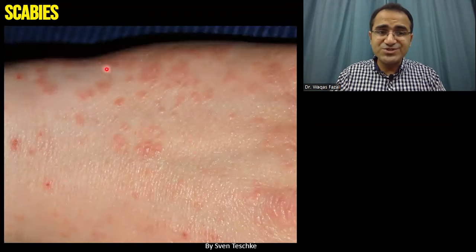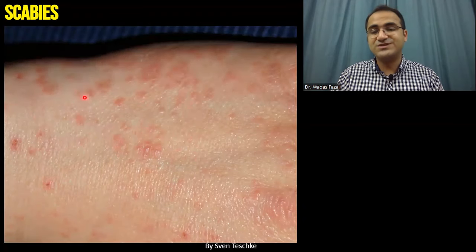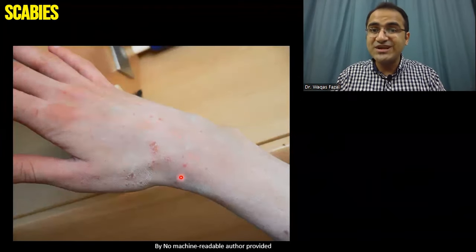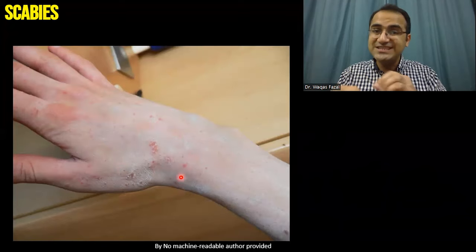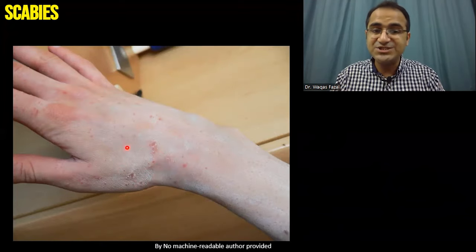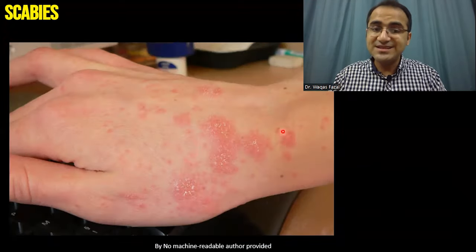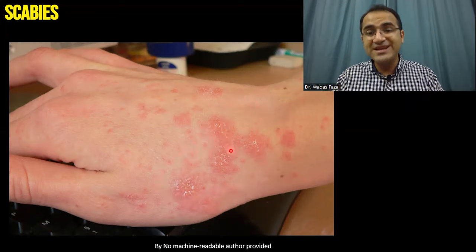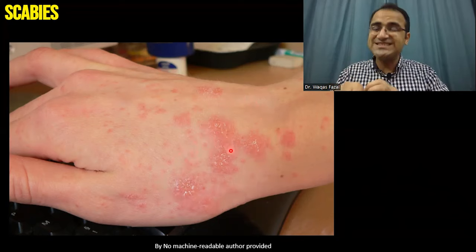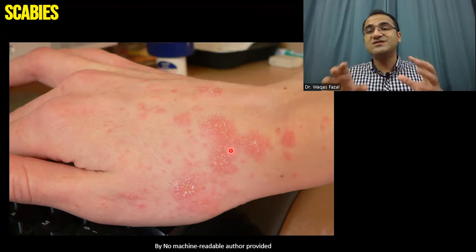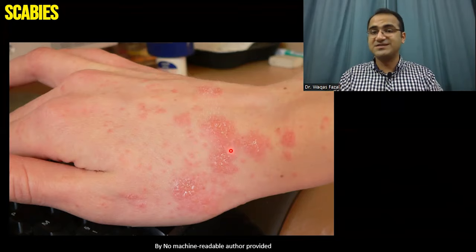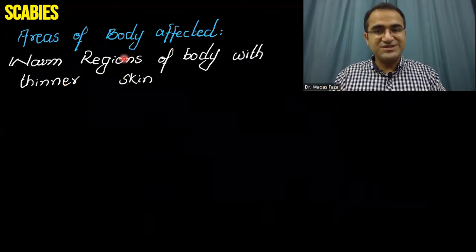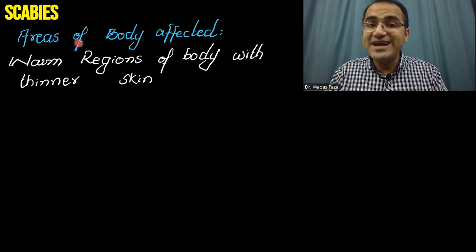This is a picture showing erythematous papules due to scabies. This is a picture showing excoriated skin — look at the dry, itchy skin. This is another picture showing excoriations mainly because the person is scratching the skin due to excessive itching and pruritus. These are the clinical features with which the patient will present.